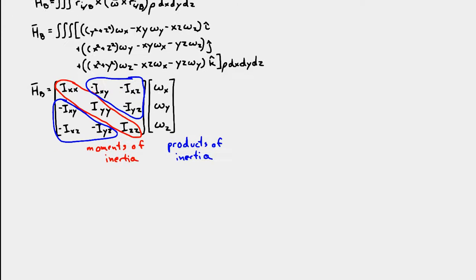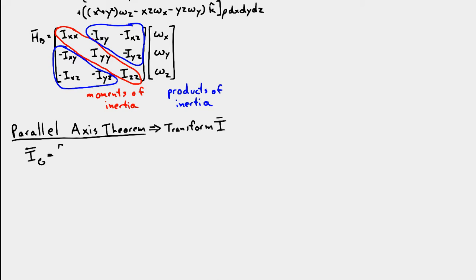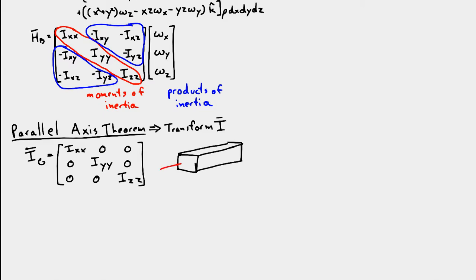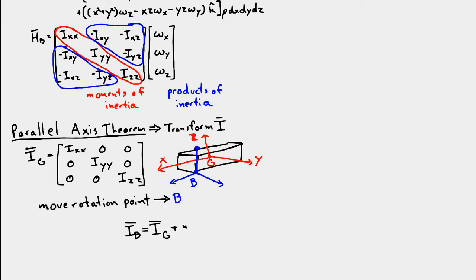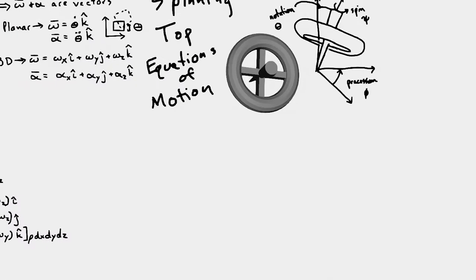We have this inertia matrix with I_{xx}, I_{yy}, and I_{zz}, which is the result of this triple integral over the volume. If I want to change the point of rotation to some other point B, I can use the parallel axis theorem, where the inertia matrix around B equals the inertia matrix around G plus m times the integral — which gives y-squared plus z-squared, x-squared plus z-squared, x-squared plus y-squared, and then all the extra products of inertia terms.